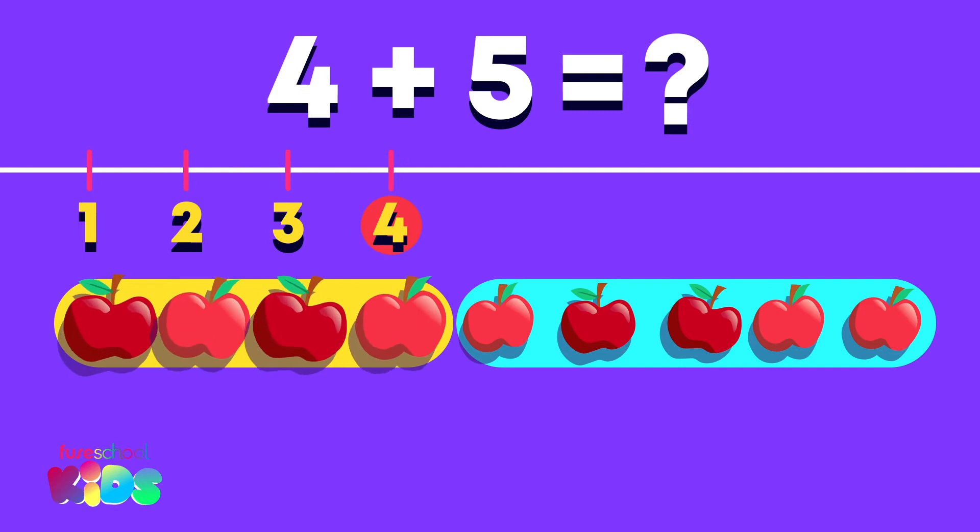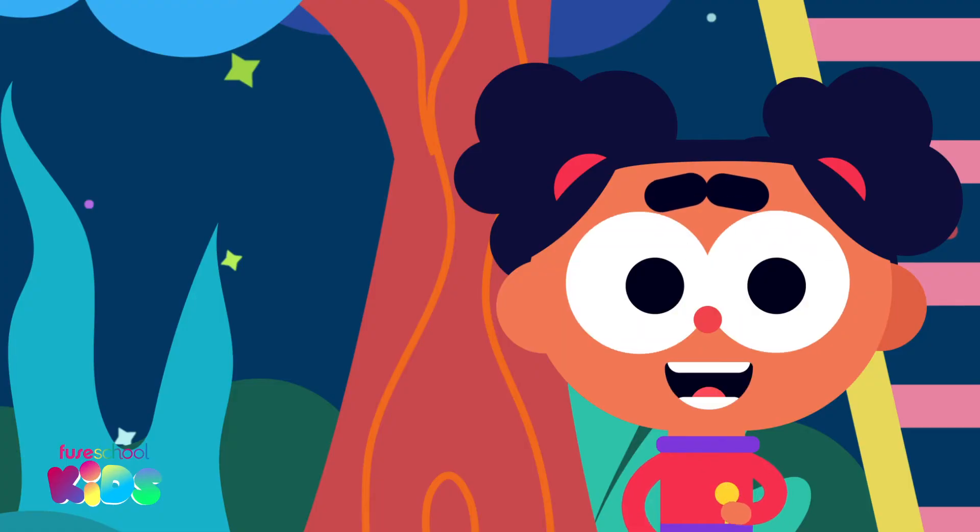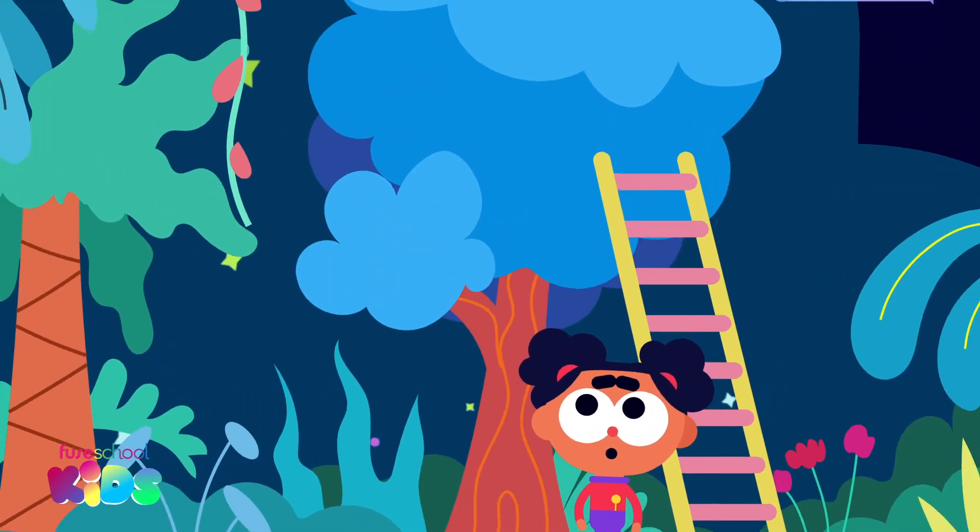We have four. We need to add or plus five more. Count on with me. Five, six, seven, eight, nine apples. Great counting. Let's pick some more.